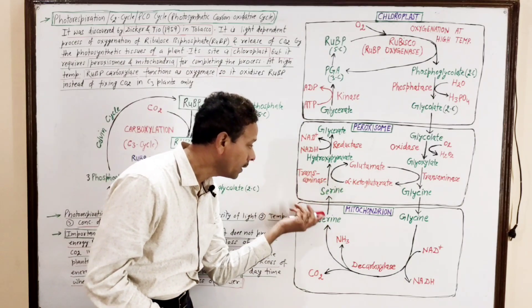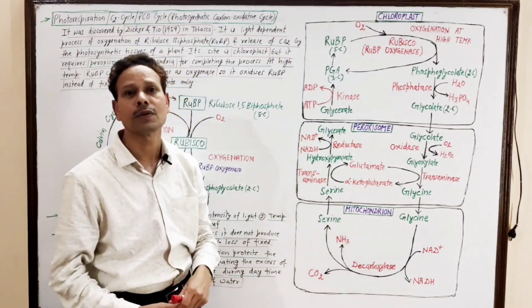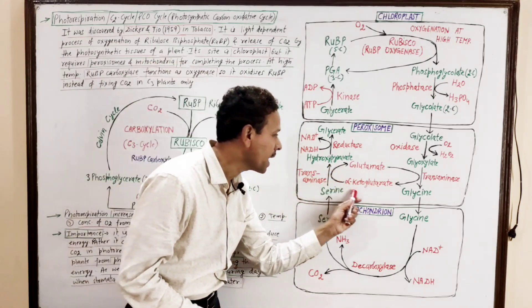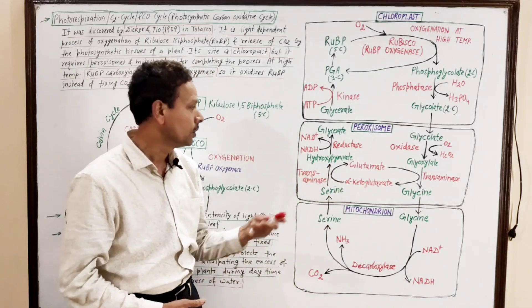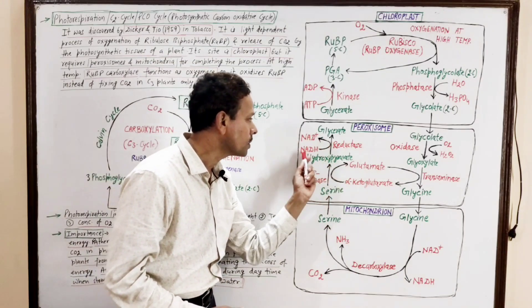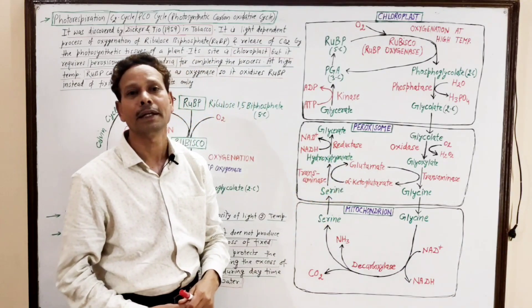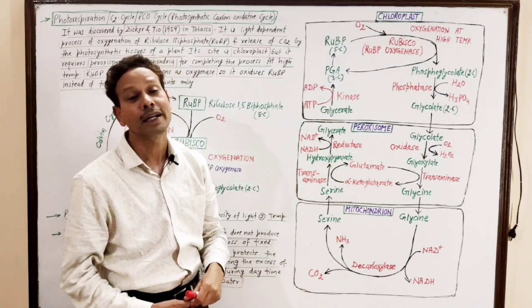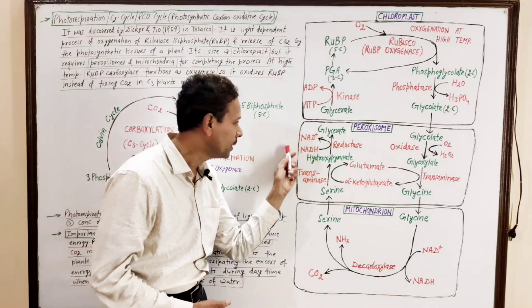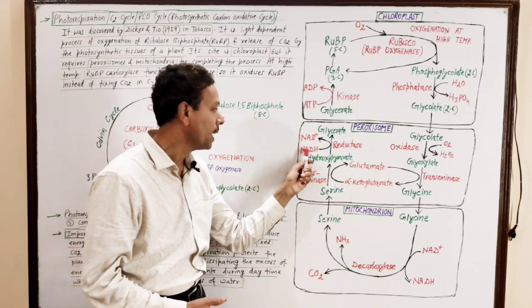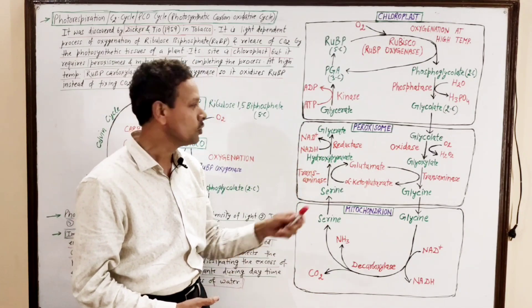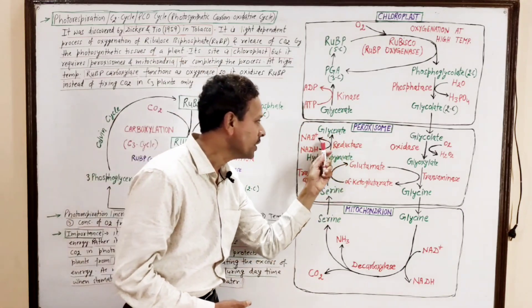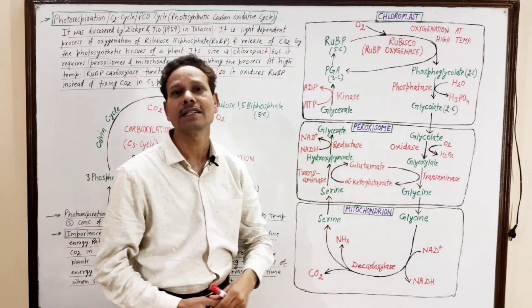This product serine enters the peroxisome again. Here it undergoes transamination in the presence of alpha-ketoglutarate to produce hydroxypyruvate and glutamate. This hydroxypyruvate undergoes reduction in the presence of NADH — the reducing power — to produce glycerate and NAD+. The reaction is catalyzed by a reductase enzyme.